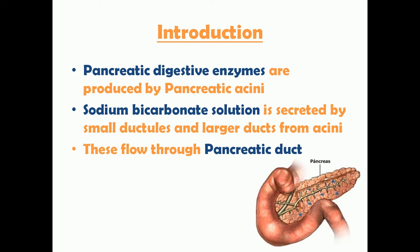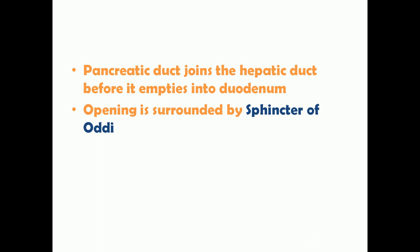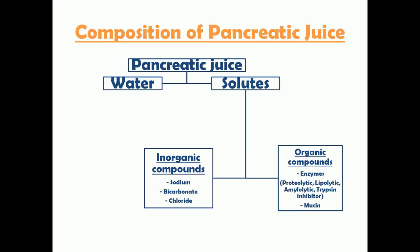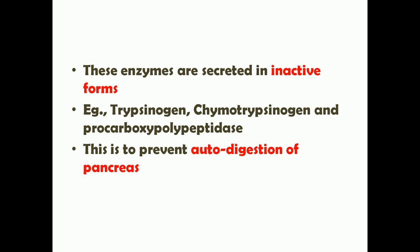The combination of enzymes, sodium bicarbonate, and water flows through the pancreatic duct, which joins with the hepatic duct, and together they empty into the second part of the duodenum at the papilla of Vater. This opening is surrounded by a sphincter known as the sphincter of Oddi. The composition of pancreatic juice is classified into water and solutes — inorganic compounds such as sodium, bicarbonate, and chloride ions, and organic compounds including enzymes and mucin.